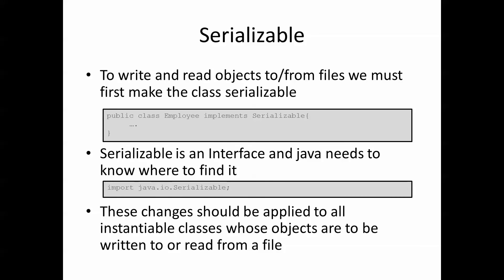To write and read objects to and from files, we must first make the class serializable. Here we have the example of the Employee class which implements Serializable. It's important in the Employee class code to add implements Serializable to the class header. Serializable is an interface, and Java needs to know where to find it, so we would also right-click and fix imports in NetBeans and do import java.io.Serializable. These changes need to be applied to all instantiable classes whose objects are to be written to or read from a file.